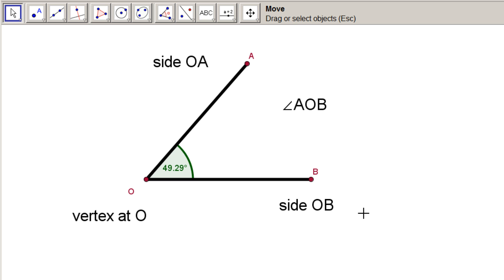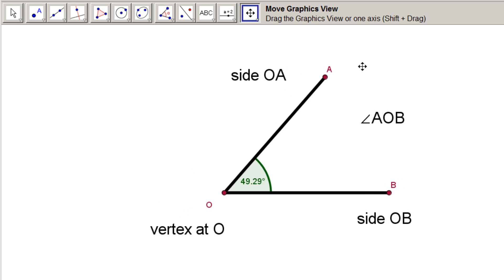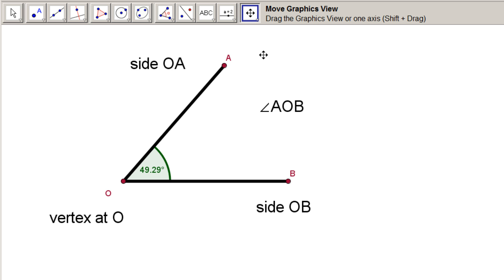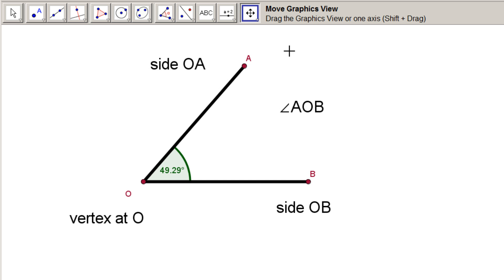Now if you do want to make this angle yourself, you may want to play around with it a little. To centre things, click the Arrowed Cross Move Graphics view. Like so. To alter the lengths of the angle arms and the angle size, use the big arrow, the Move tool. Neat or what?